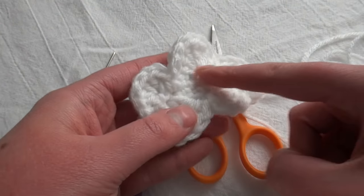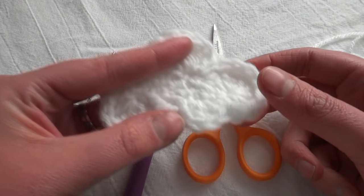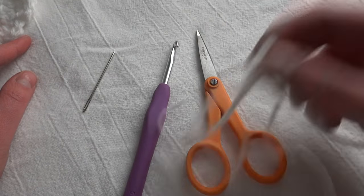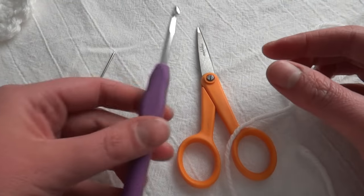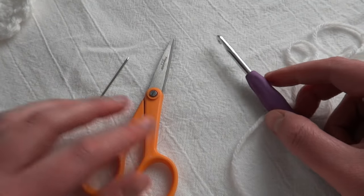But it's pretty easy. It's just two rounds. You'll use single crochets, double crochets, and triple crochets. And you'll just need white yarn, an H5 millimeter hook, and then scissors and a tapestry needle to weave in your ends.